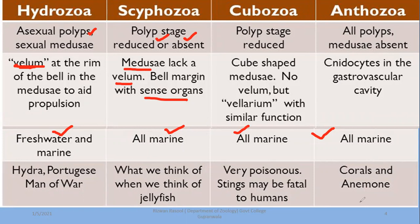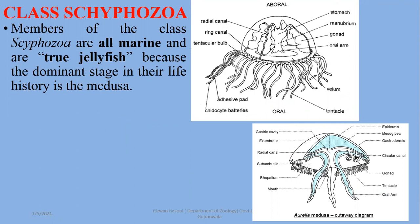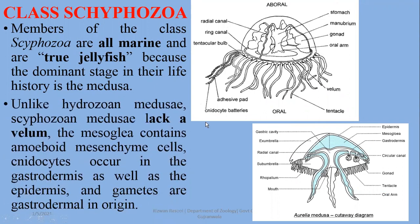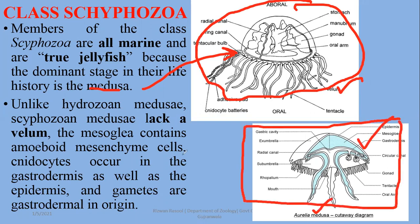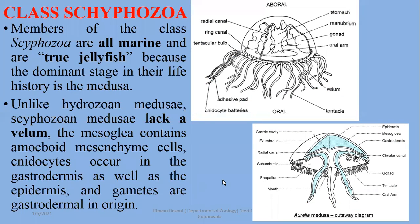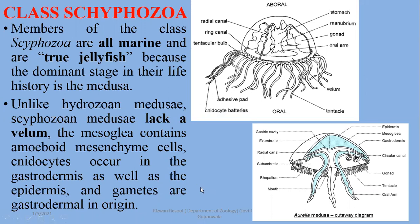Scyphozoans are known as true jellyfishes because the dominant stage in their life history is a medusa — bell-shaped or inverted bowl-shaped, an umbrella-like shape. In the medusae of Aurelia, the mesoglea contains amoeboid mesenchyme cells. In Hydrozoa, amoeboid mesenchyme cells are absent. In scyphozoan medusae, cells can be found in both the gastrodermis and epidermis, and the gametes are gastrodermal in origin.